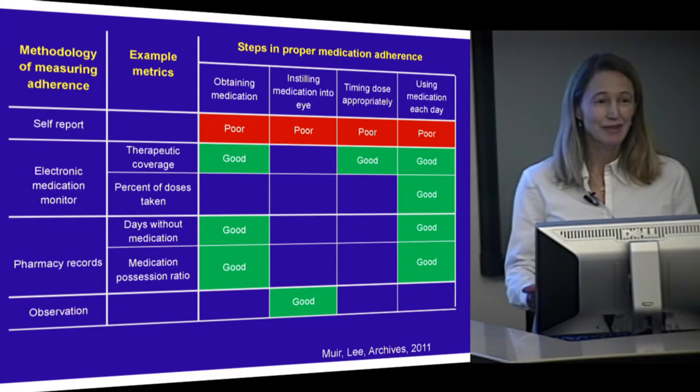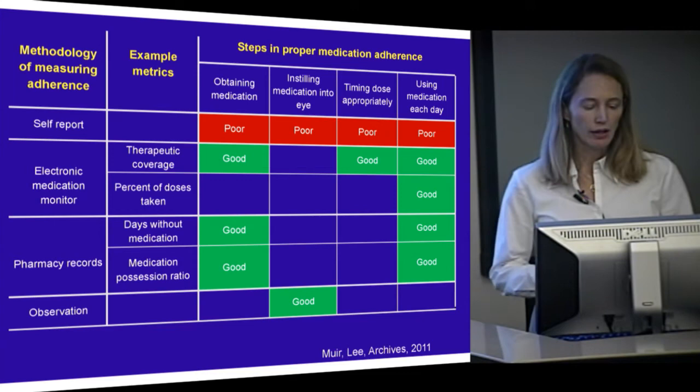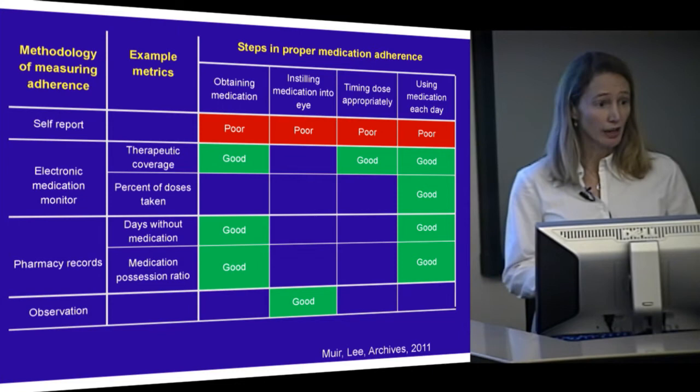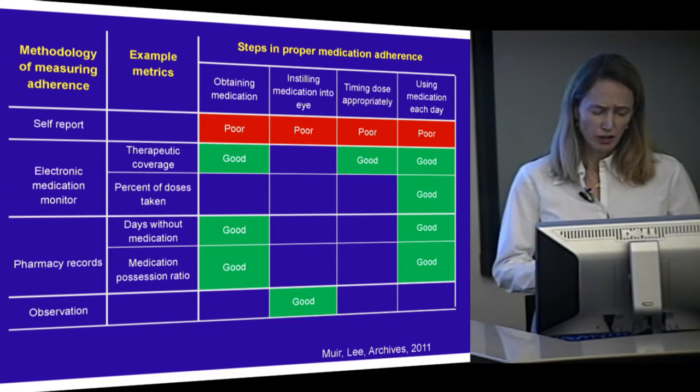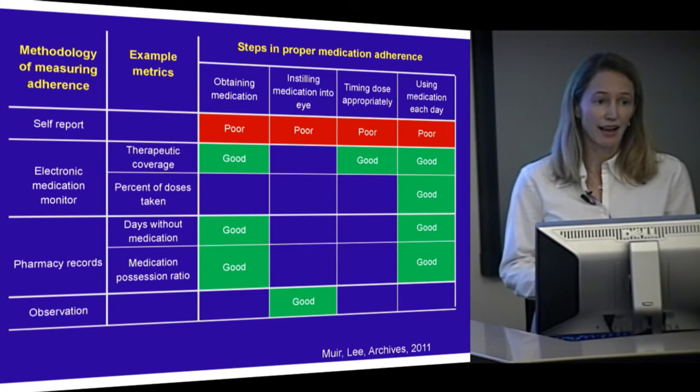Electronic monitors are available — they're nice but expensive and don't work for everything. Pharmacy records are helpful, particularly in a closed pharmacy system like the VA, but difficult to use outside of the VA. And without observation, we don't know if patients can actually get their drops into their eyes — none of these measures tell us where the drop is actually going, and the only way we can determine that is by direct observation.